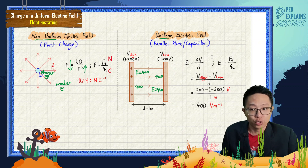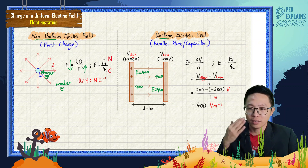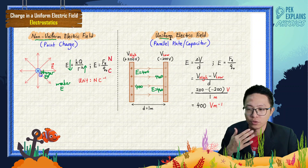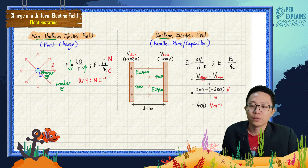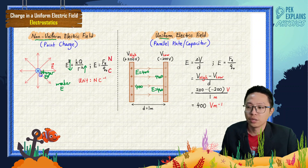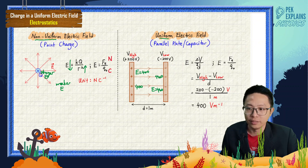Don't use E = ΔV over d to find the non-uniform electric field for a point charge — they are two different things. For point charge non-uniform electric field, use kq over r squared, because the electric field depends on the distance from the point charge. For uniform electric field between the parallel plates, only use ΔV over d.